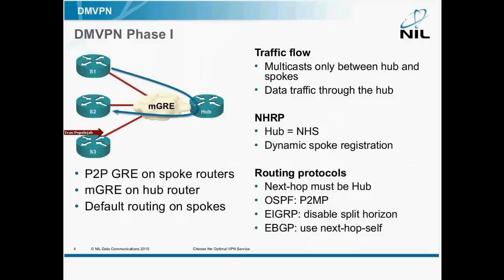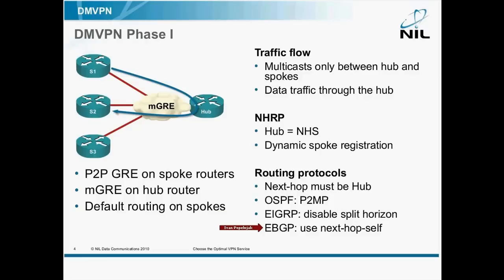From the routing perspective, the next hop must be the hub router. In OSPF, this means you have to use the point-to-multipoint OSPF network type. In EIGRP, you just disable split horizon and it works. And in EIGRP, you also have to use next-hop-self.